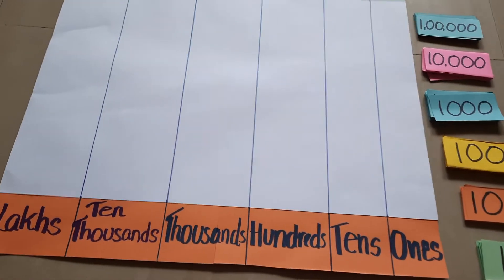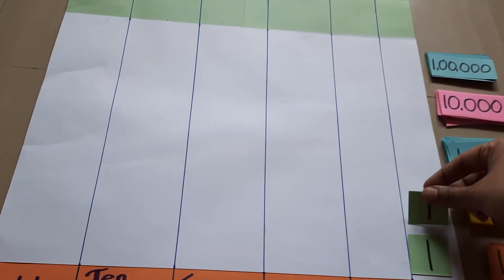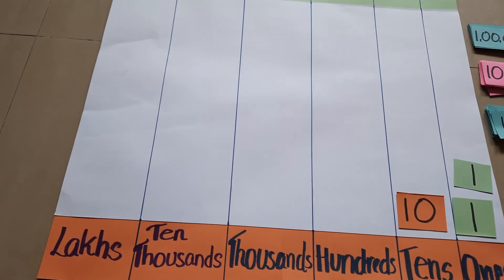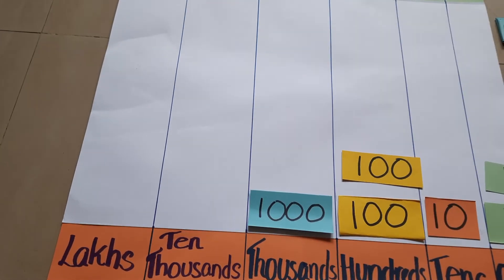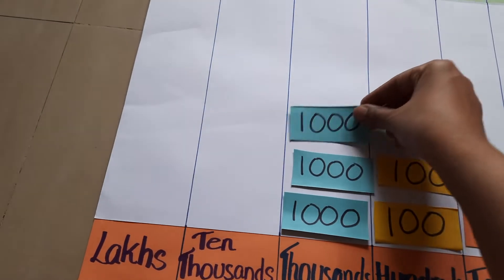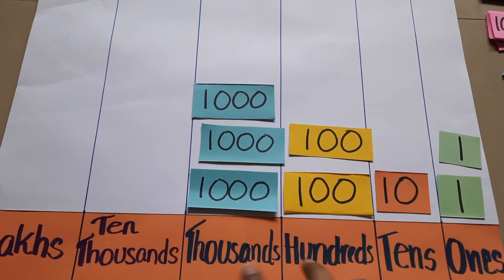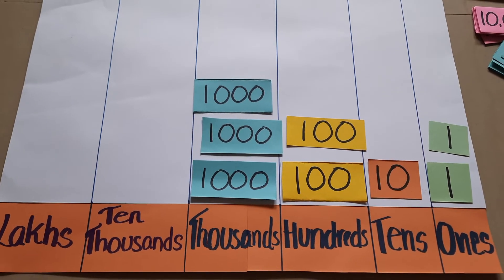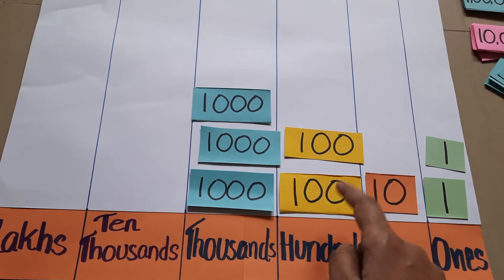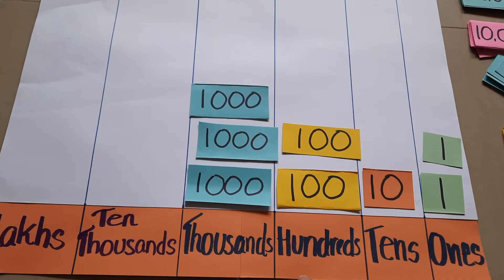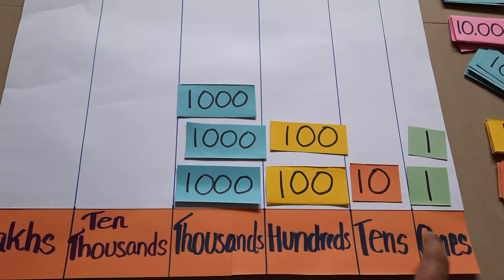Let us play this game now. I am going to put the cards in the columns. The question here is: what number is there in this place value chart? How many thousands are there? One, two, three — so this is three thousand. How many hundreds? Two hundreds. So three thousand two hundred, then ten plus two is twelve, making three thousand two hundred and twelve.